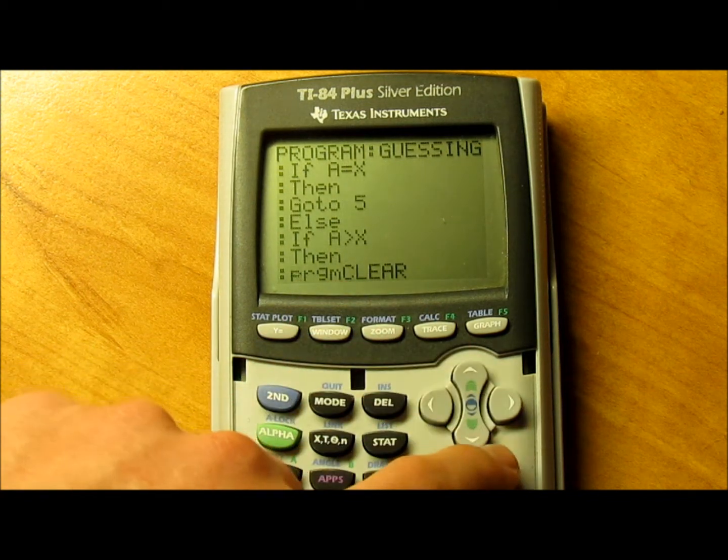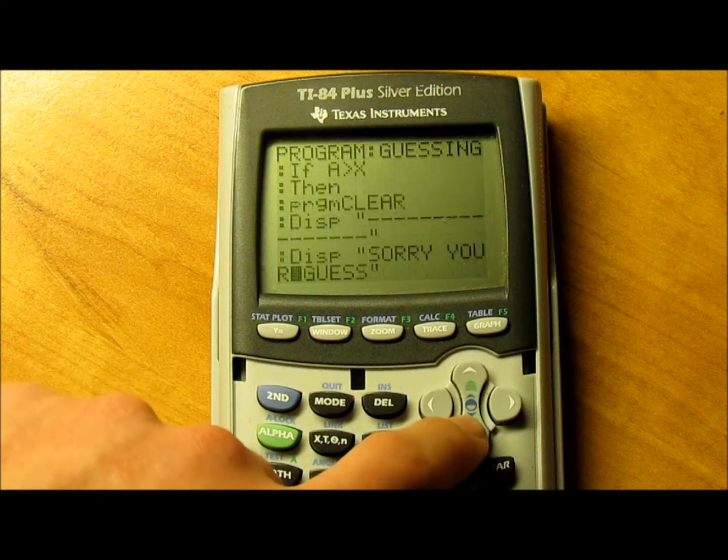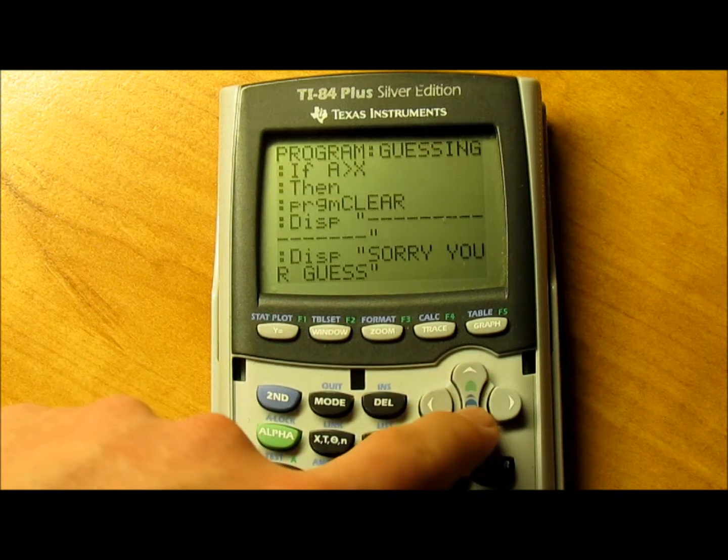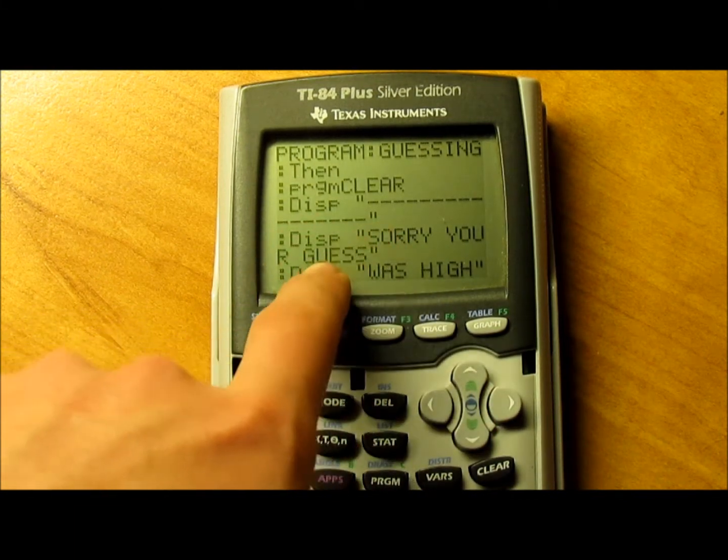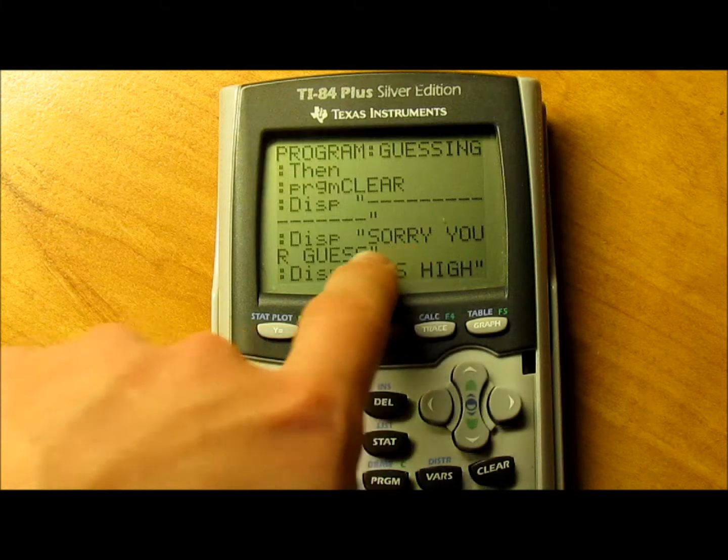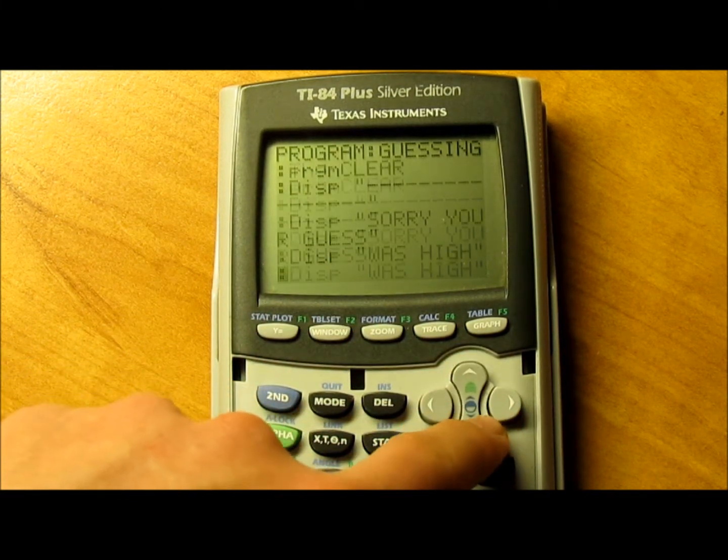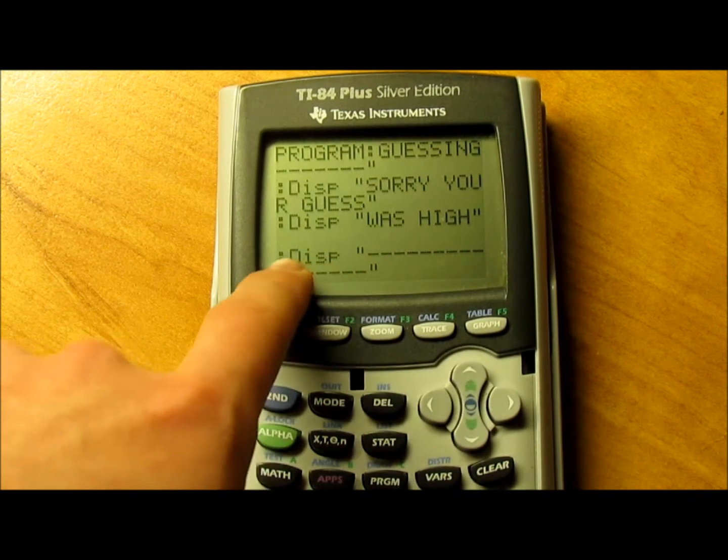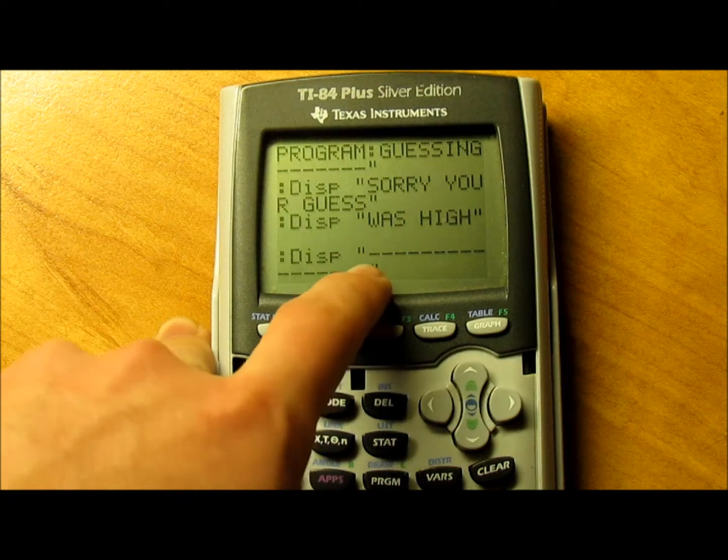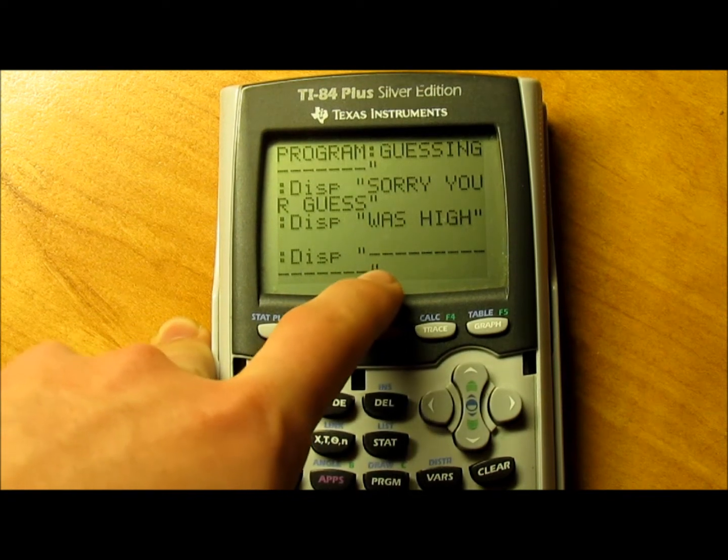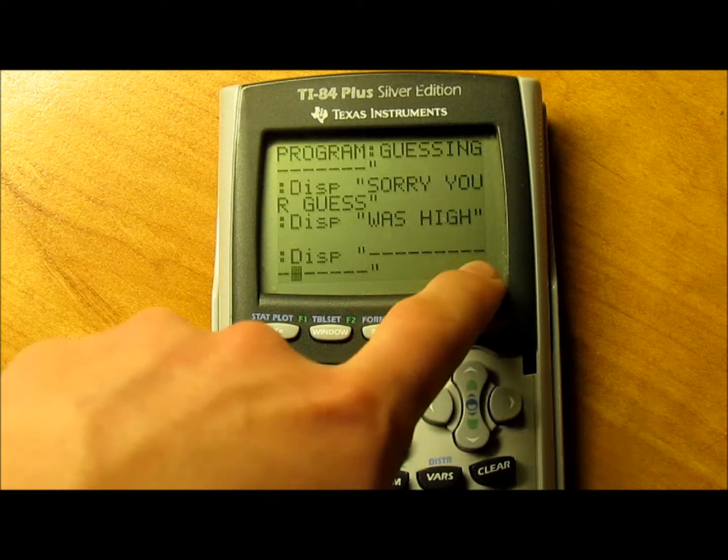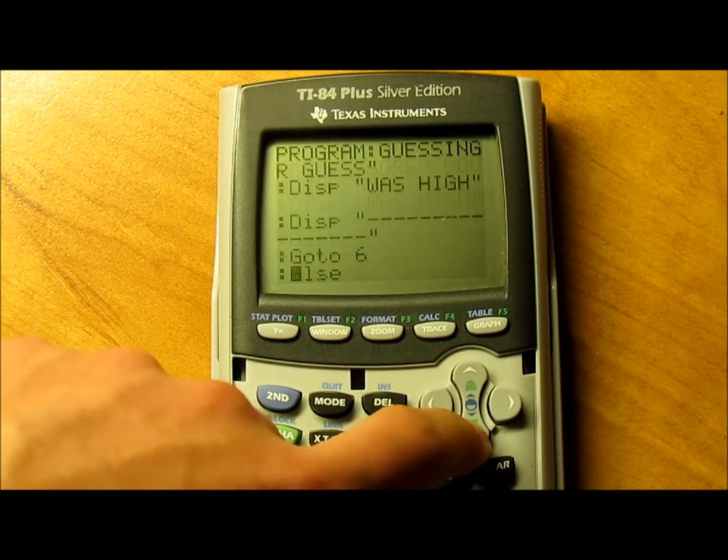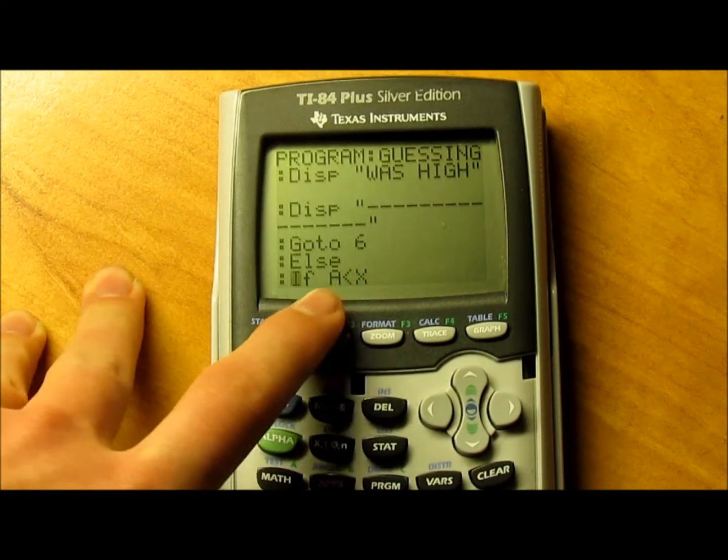Program clear, display that line. Display sorry, your guess was high in quotations. Then display another line - I'm using a minus sign for that, hit it about sixteen times. Then go to 6. Else,